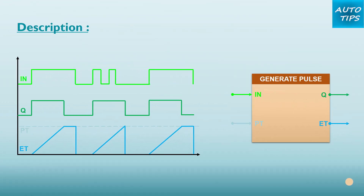You can use the Generate Pulse instruction to set the queue output for a programmed duration. The instruction is started when the result of logic operation RLO at input IN changes from 0 to 1 — a positive signal edge.